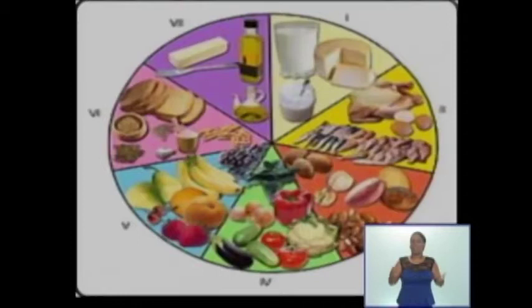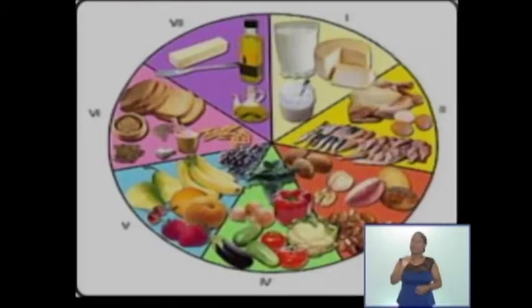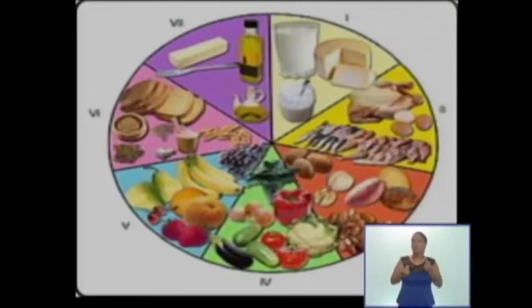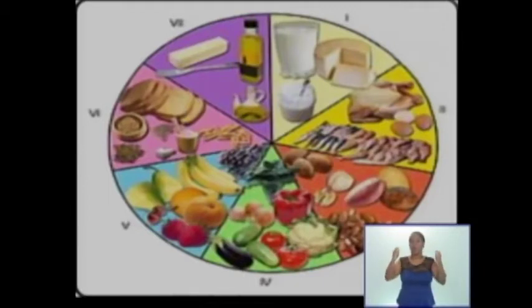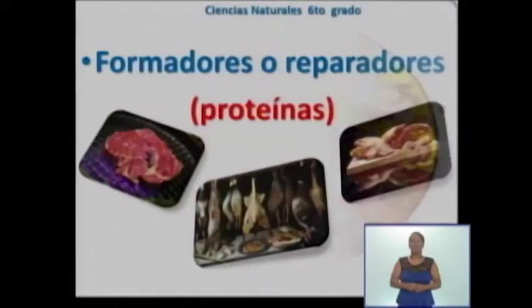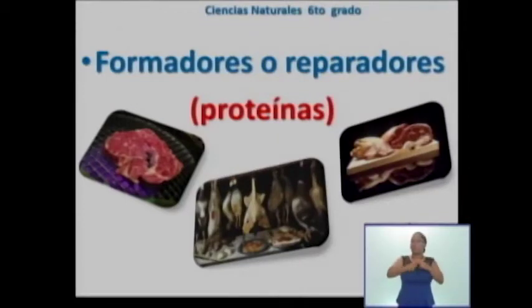¿Qué observan? Correcto, son alimentos. Seguro que siempre tus familiares te han dicho que debes comer de todos los alimentos y estar tranquilos después de comer, para que tengas una buena digestión. Observas en la imagen muchos alimentos distribuidos en grupos. Todos ellos los necesitamos para poder estar saludables, poder crecer y tener la energía necesaria para correr, jugar, estudiar y disfrutar de nuestros derechos. Los alimentos tienen varias clasificaciones. Entre ellos encontramos los formadores o reparadores, más conocidos como proteínas.